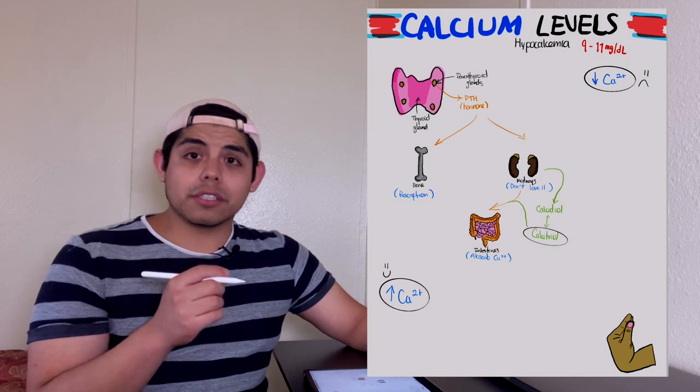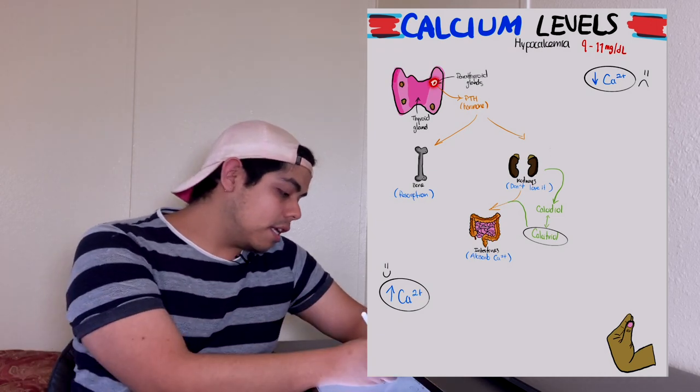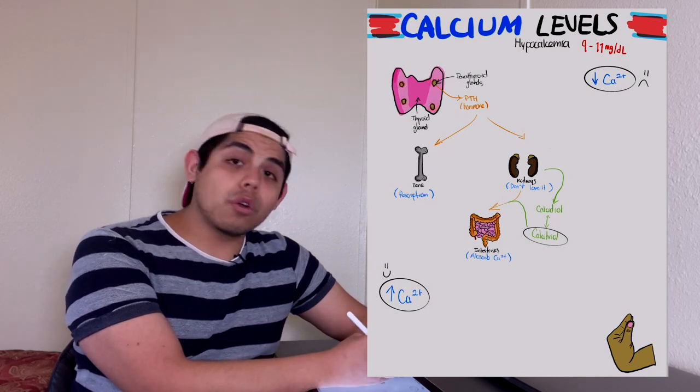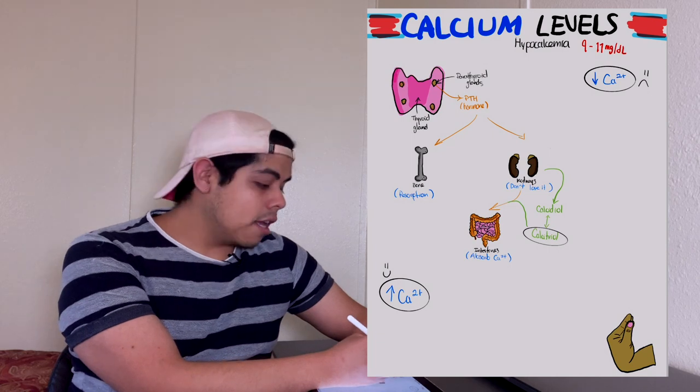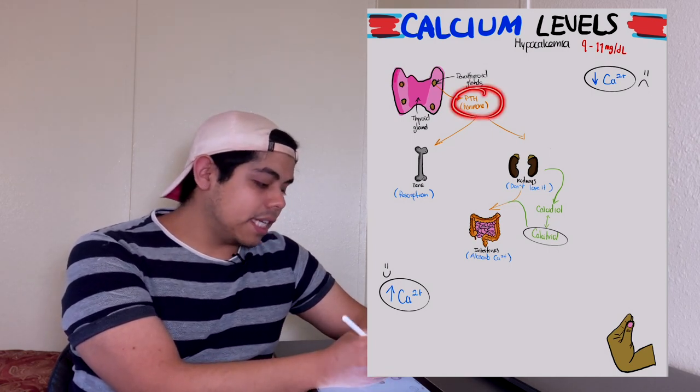What the body is going to do is use the parathyroid glands, which are embedded in the thyroid gland. These small dots over here, those are the parathyroid glands, and they release PTH, which is parathyroid hormone.